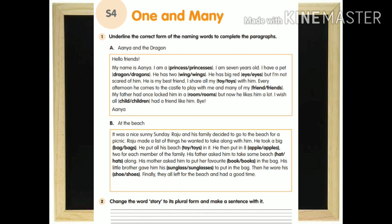This is our worksheet. Here you need to underline the correct form of the naming word. For example: 'Hello friends, my name is Ania. I am a princess or princesses? I have a pet dragon or dragons?' Underline the correct one. In Part B, read the paragraph and change the naming words to their plural or singular forms. For example: he took a big bag or bags — underline the correct form; he put all his beach toy or toys in it — underline toys.